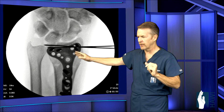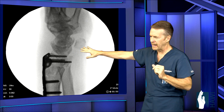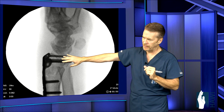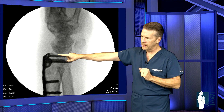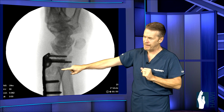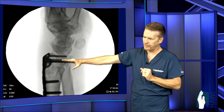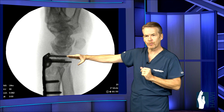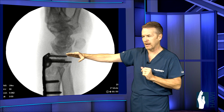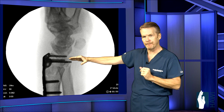So let's take a look after the pins have been removed. You can see the plate is on the back side of the wrist, and that restoration of the tilt of the distal radius is now towards the palm.